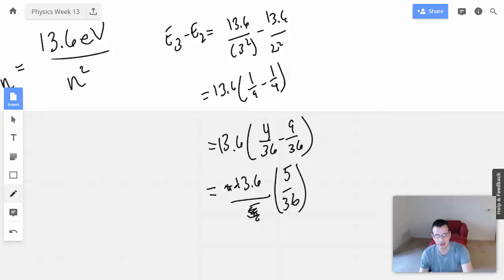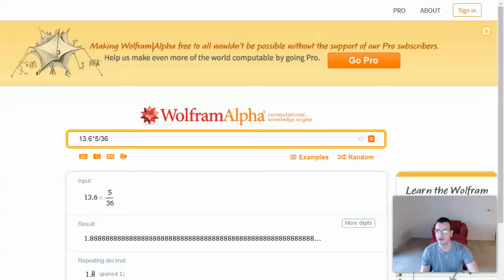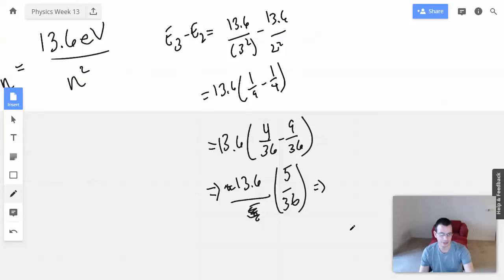I'm not going to care about that negative. Make an arrow sign so I don't have to justify myself. 1.9 electron volts.